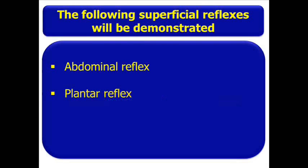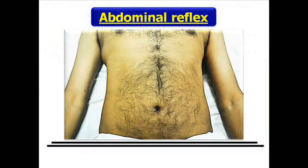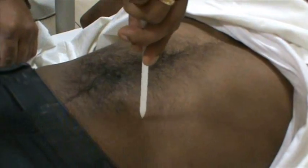Superficial reflexes are polysynaptic in nature and can be elicited by cutaneous stimulation. Abdominal reflexes can be elicited by stroking the abdominal wall with a blunt object in all four quadrants as shown. Contraction of abdominal muscles can be observed.